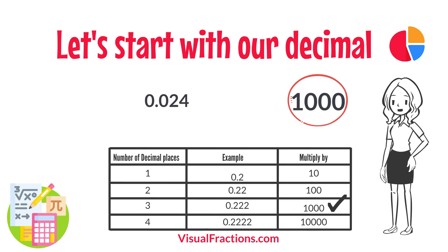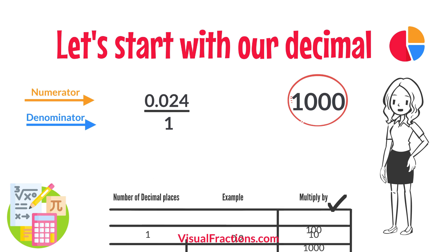To convert this decimal into a fraction, you initially put 0.024 over 1, essentially treating the decimal as the numerator in a fraction where the denominator is 1.